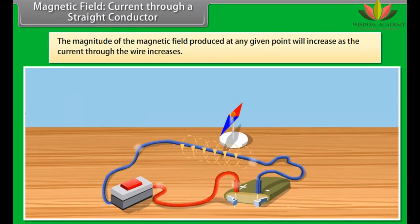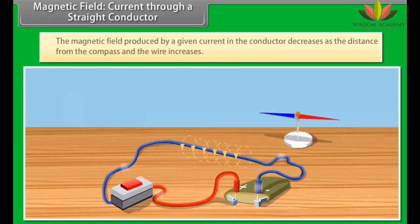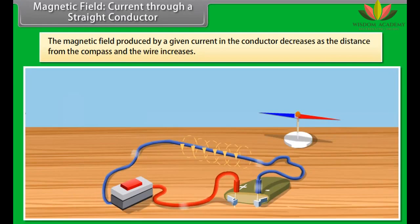Now, try moving the compass away from the current passing through the wire. You will see that the magnetic field produced by a given current in the conductor decreases as the distance from the compass and the wire increases.